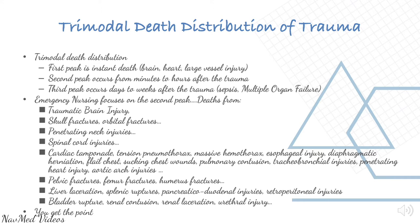Emergency nursing focuses on the second peak: deaths from traumatic brain injury, skull fractures, penetrating neck injuries, spinal cord injuries, cardiac tamponade, tension pneumothorax, pelvic fractures, liver laceration, splenic ruptures, and bladder rupture. The principle is to treat the greatest threat to life first.